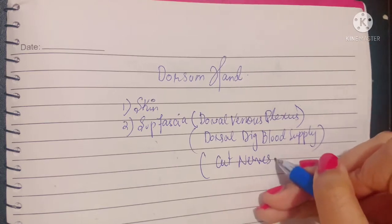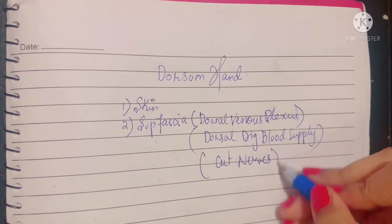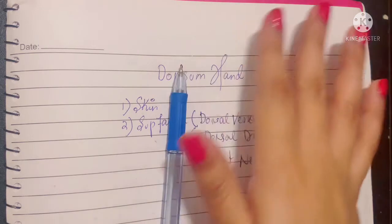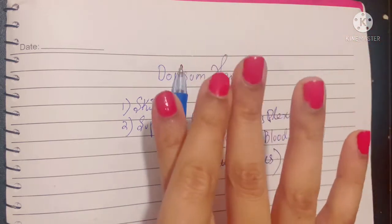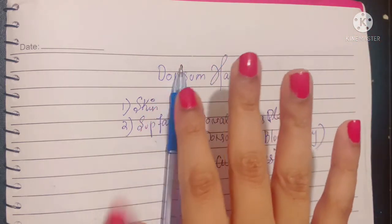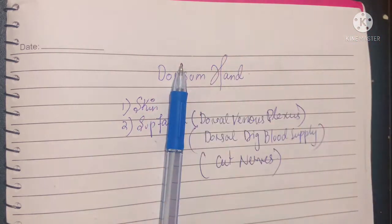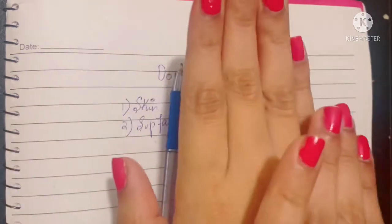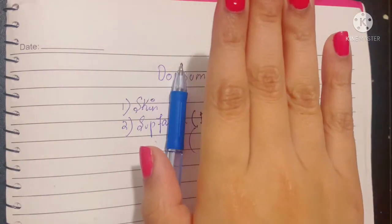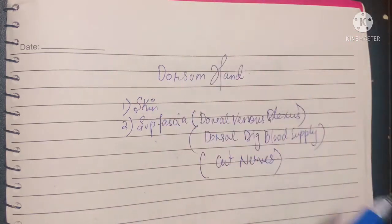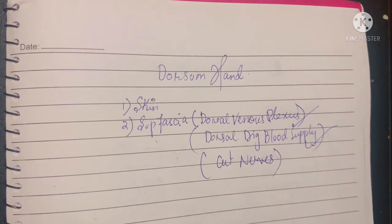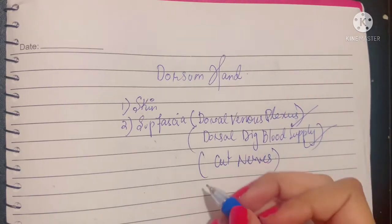Apart from the vessels, the superficial fascia also contains the cutaneous nerves that supply the back of the hand, which we've already discussed in other videos. The lateral three and a half digits are supplied by the median nerve, the medial two and a half by the ulnar nerve, and the lateral two and a half by the radial nerve.